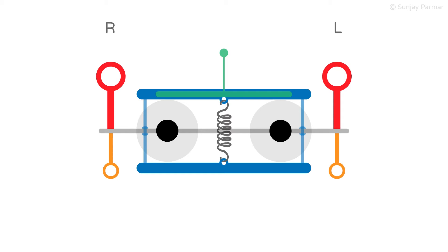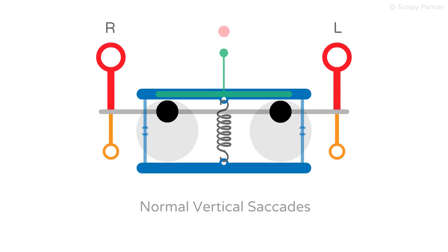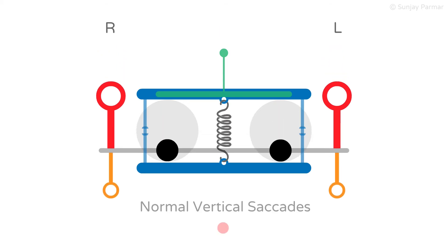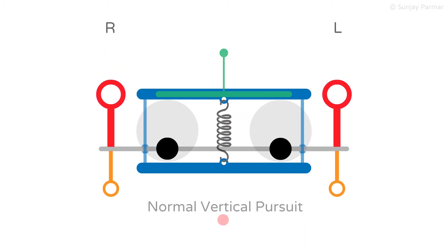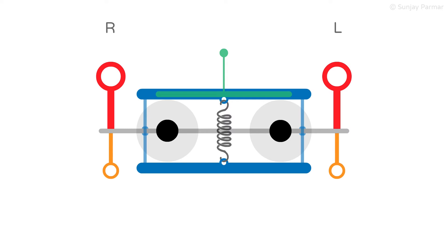When we decide that we want to make a vertical saccadic movement, both frontal eye fields must be activated. For vertical smooth pursuit movement, both parieto-occipital eye fields must be activated. Conceptually, this makes sense as looking up and down requires both cerebral hemispheres to be active. The eye fields are not shown in this analogy. Impulses for initiating vertical eye movements travel from the eye fields bilaterally to structures in the thalamo-mesencephalic junction, where there are a number of important structures that control vertical gaze.